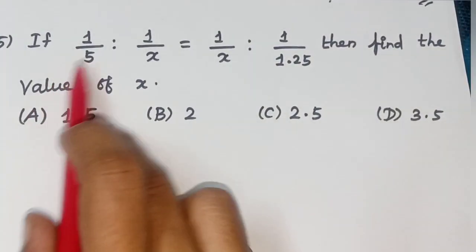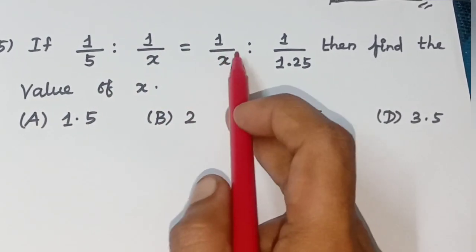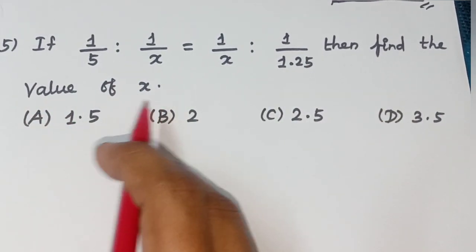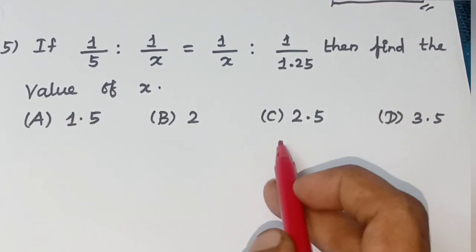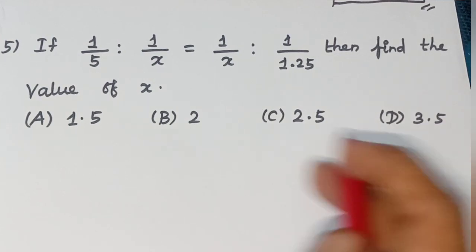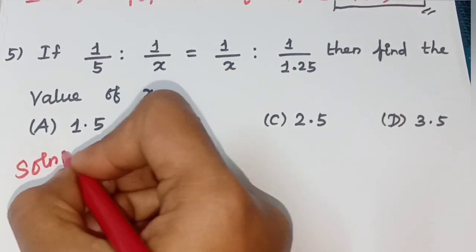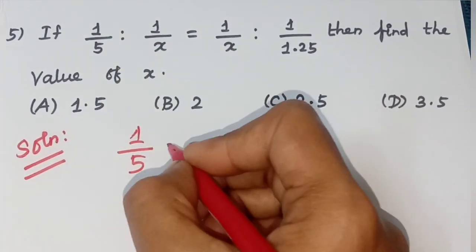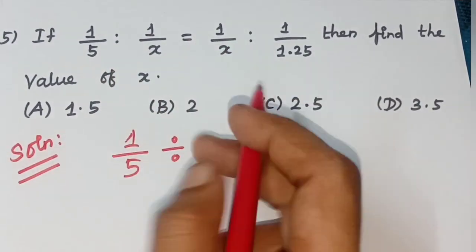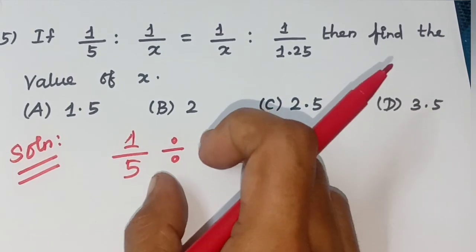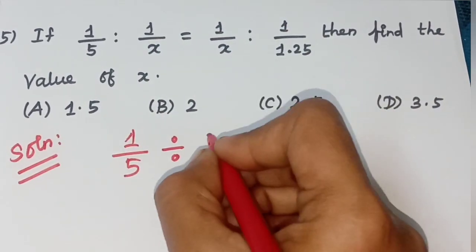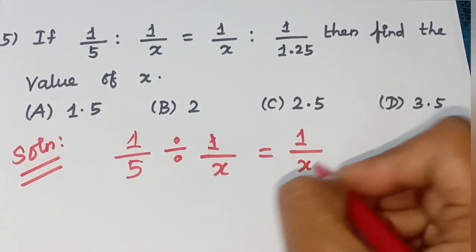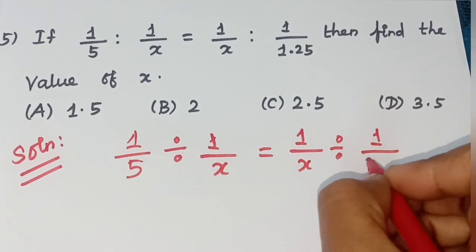Fifth question: If 1/5 : 1/X = 1/X : 1/1.25, find the value of X. Options: A) 1.5, B) 2, C) 2.5, D) 3.5.